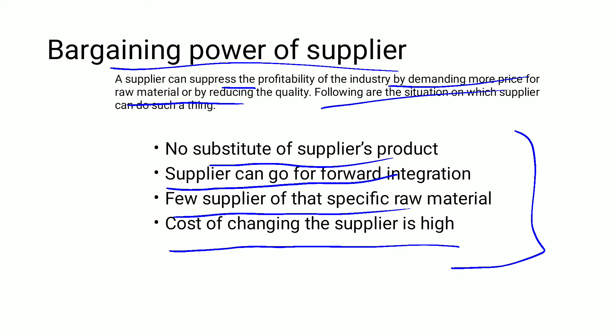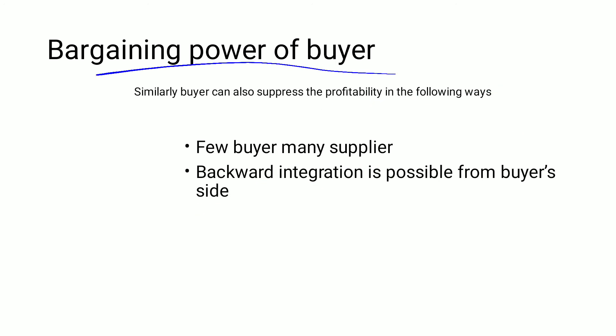If the cost of changing a supplier is high, you will not easily switch, which gives the supplier more bargaining power. In that situation you have to negotiate on the supplier's terms. Similarly, buyers also have bargaining power that can affect profitability. Buyers can reduce the profitability of an industry.